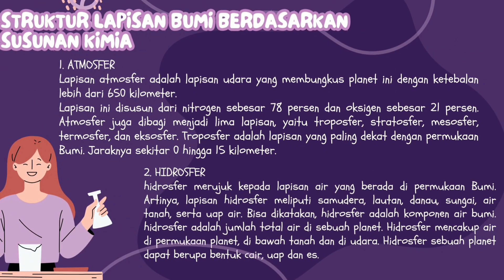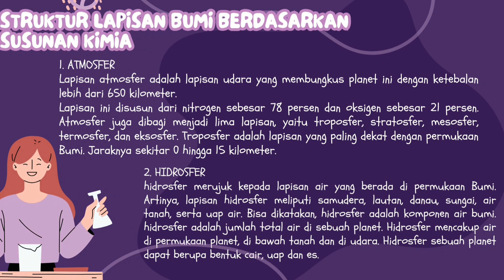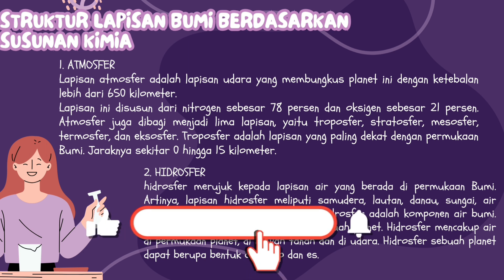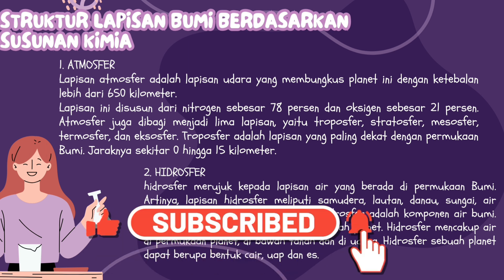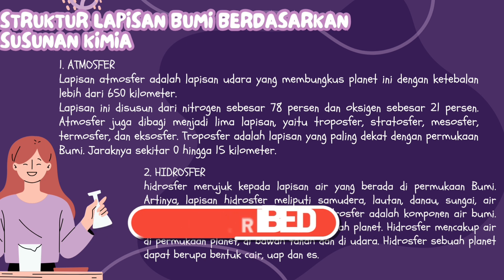Struktur lapisan bumi berdasarkan susunan kimia: yang pertama adalah atmosfer. Lapisan atmosfer adalah lapisan udara yang membungkus planet ini dengan ketebalan lebih dari 650 km. Lapisan ini disusun dari nitrogen sebesar 78% dan oksigen sebesar 21%. Atmosfer dibagi menjadi lima lapisan, yaitu troposfer, stratosfer, mesosfer, termosfer, dan eksosfer. Troposfer adalah lapisan yang paling dekat dengan permukaan bumi, jaraknya sekitar 0 hingga 15 km.